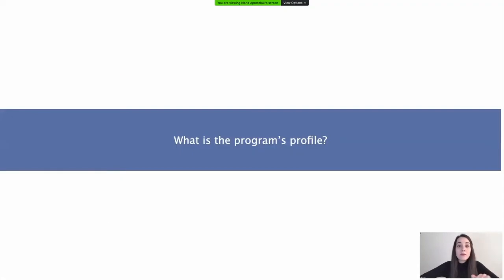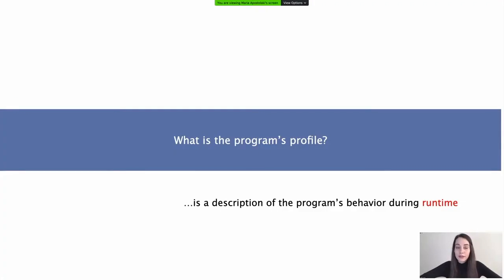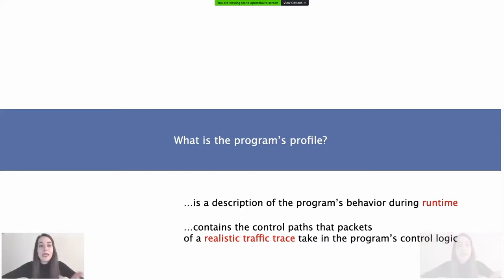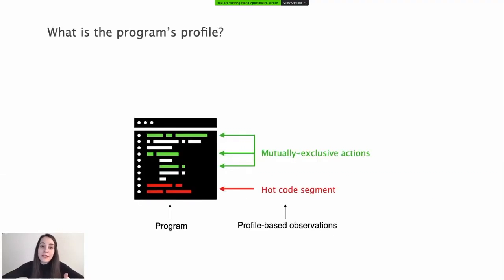What is the program's profile? A program's profile is a description of the program's behavior during runtime. In the context of P4, the program's profile contains the control paths that packets of a realistic traffic trace take in the program's control logic. By realistic, I mean that the traffic trace resembles the traffic that the program is expected to run on. For example, the profile might contain information such as that a certain set of actions are mutually exclusive — never executed by the same packet — or that another segment is very frequently used.